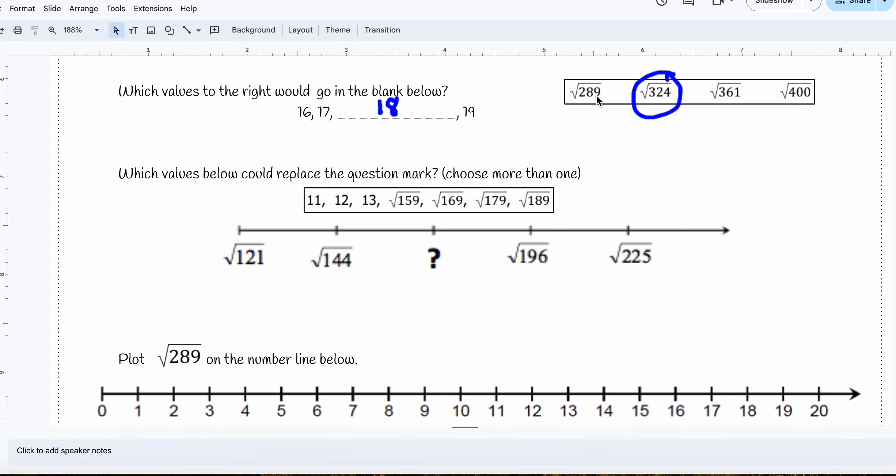Now, I also know square root of 289 is 17, square root of 361 is 19, and the square root of 400 is 20.